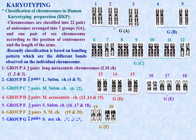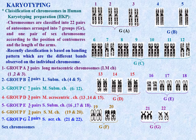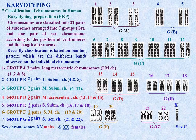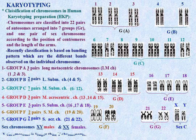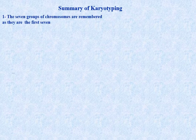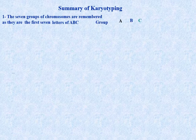Group G includes two pairs of short acrocentric chromosomes - chromosomes 21 and 22. Sex chromosomes are XY in males and XX in females; the X chromosome is longer than the Y chromosome. Summary: the seven groups of chromosomes are easily remembered as the first seven letters of the alphabet: groups A, B, C, D, E, F, and G.